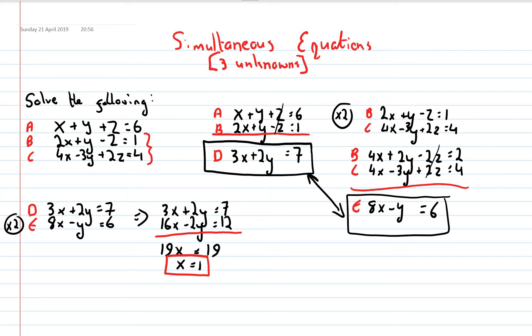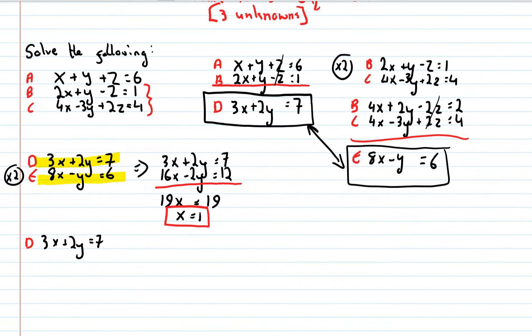I'm going to have to solve one of my unknowns. Now, I'm going to take one of these, put x back in to solve for y. I'll take the equation D. D is 3x plus 2y equals 7. I know what x is, it's 1, so 3 times 1 plus 2y equals 7. So, 3 plus 2y equals 7. 2y equals 4, so y equals 2.